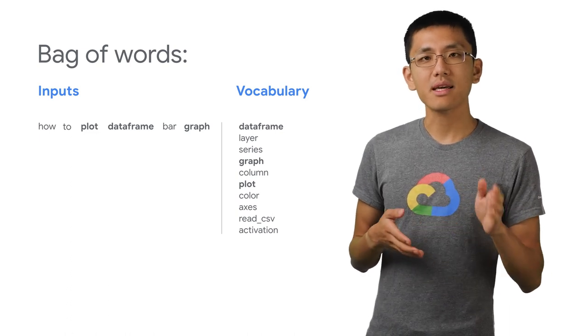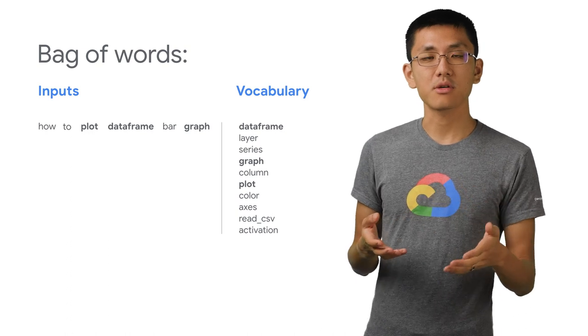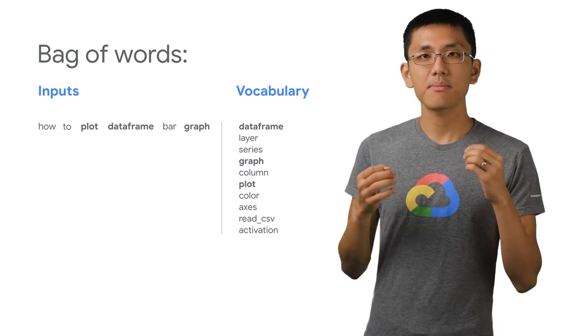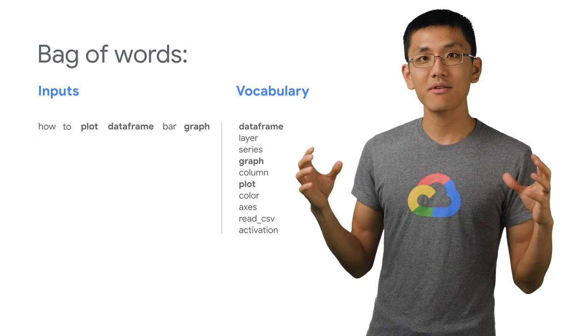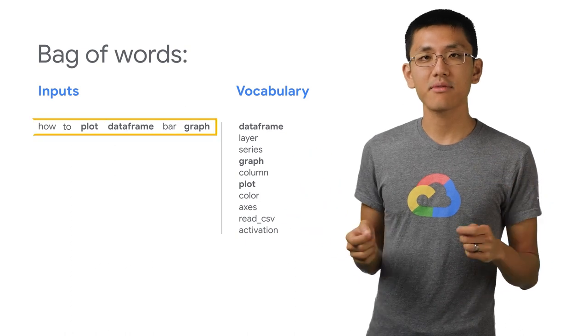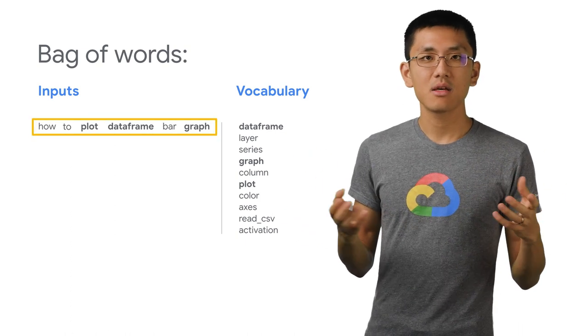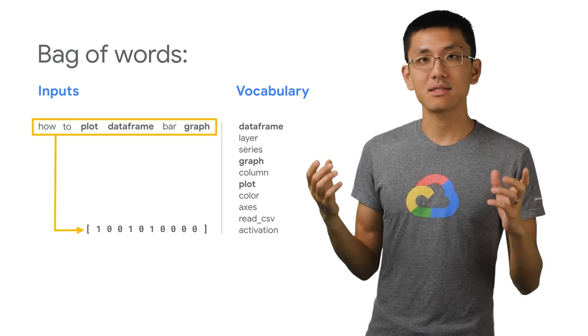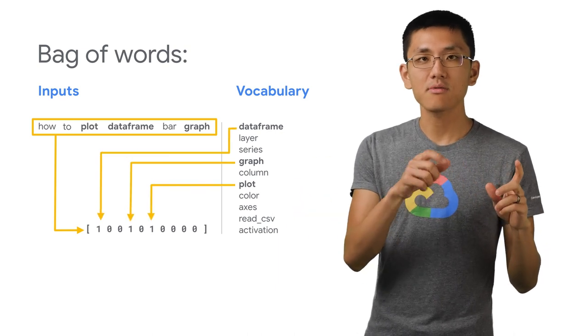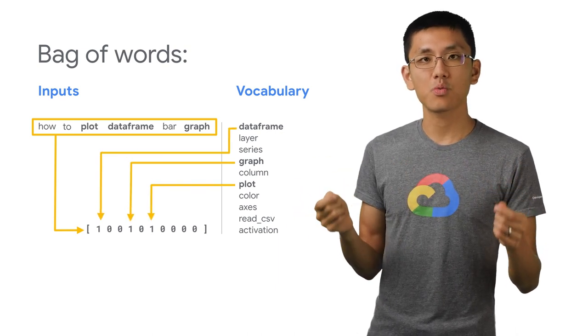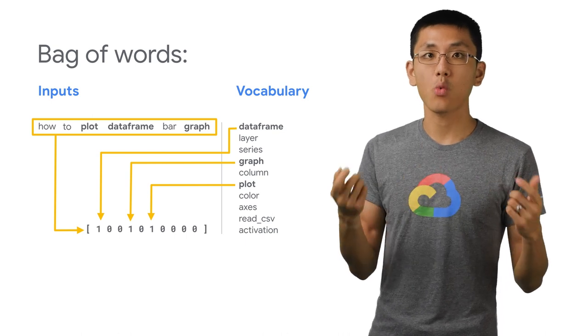And the way you might capture this information in an array or matrix would be to first make an array that represents your entire vocabulary. So in this case, we have an array of just length 10. We'd set all those values to 0 and turn on the array indices that correspond to the words in the sentence by setting them to 1.